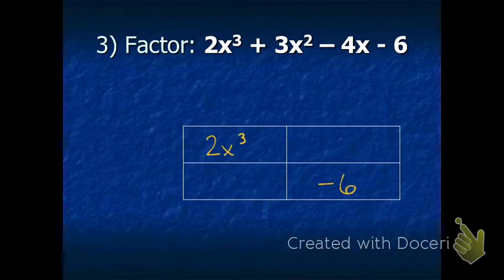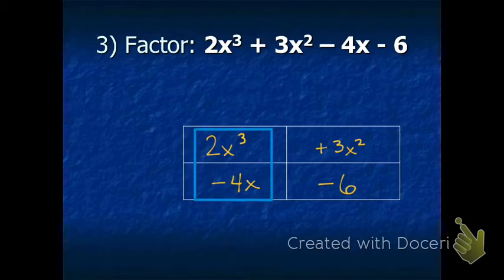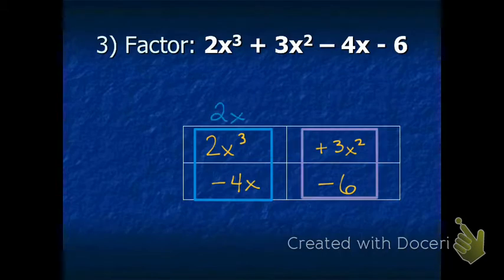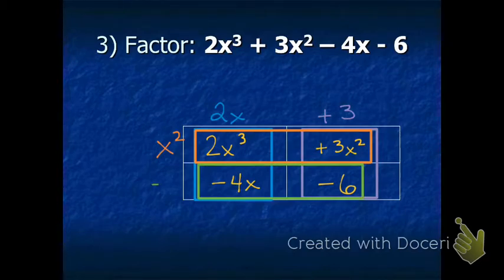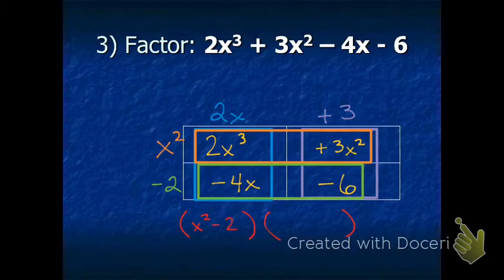I have 2x to the third, negative 6 in the bottom right, plus 3x squared in the top right, and negative 4x in the bottom left. For the vertical binomials, the greatest common factor of those two terms is 2x, and the greatest common factor of the other two terms is plus 3. For the horizontal binomials, the greatest common factor is x squared. The last binomial — both are negative — so the greatest common factor is negative 2. The final answer is x squared minus 2 times 2x plus 3, leading with the largest exponent.